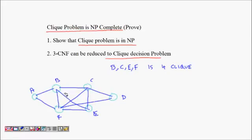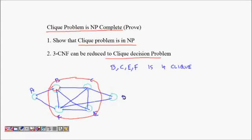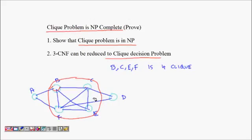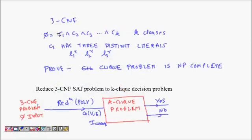Here is a graph with six vertices that has a maximal clique of size 4, because nodes B, C, E, and F are all connected to each other. This part of the graph is a complete subgraph where each node is connected to every other — a 4-clique. If you are given a clique over four vertices, using adjacency matrices you can verify in polynomial time whether it is really a clique, so this problem is in NP.